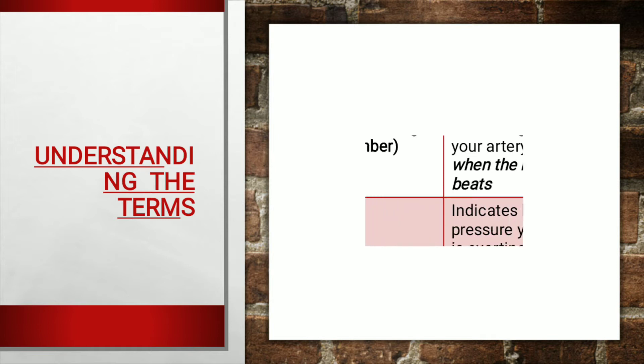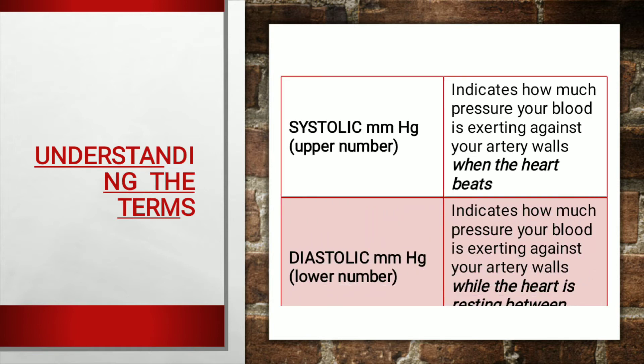Let's understand what the terms systolic and diastolic mean. In simple words, systolic is the upper number and diastolic is the lower number. Systolic indicates how much pressure your blood is exerting against your artery walls when the heart beats, whereas diastolic indicates how much pressure your blood is exerting against your artery walls while the heart is resting between beats.